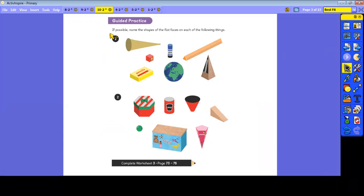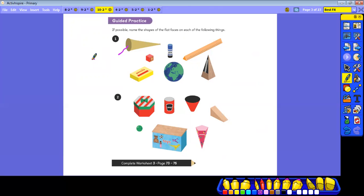In your guided practice, it says, if possible, name the shapes of the flat surfaces on each of the following things, objects. So we've got some 3D objects. We have to spot the flat faces on each of them and describe the flat faces. Name the shapes of the flat faces, not name the shapes. So we know that's a cone, and we know it's got one flat face, and that flat face, children, is a circle. So we're naming the flat faces of each of these shapes.